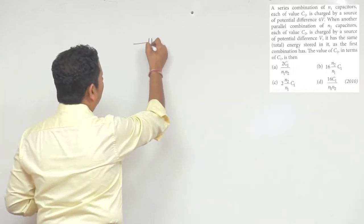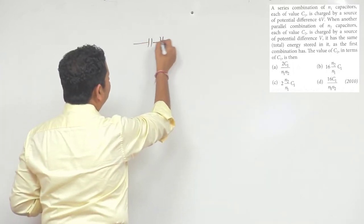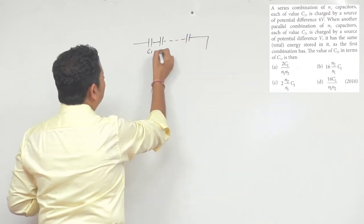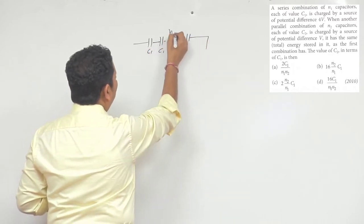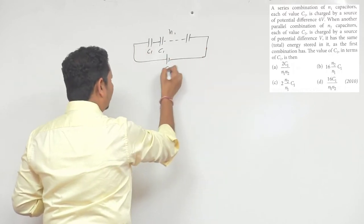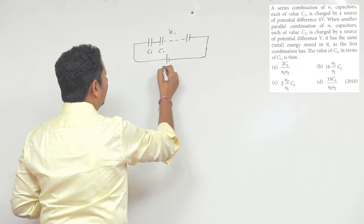If we consider the first combination - N1 capacitors, each of value C1, connected to a 4V battery. So 4V battery here.